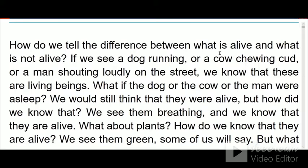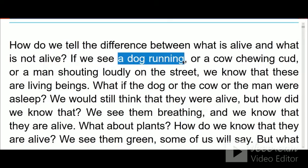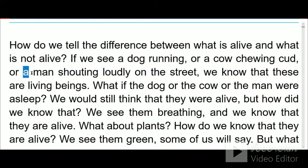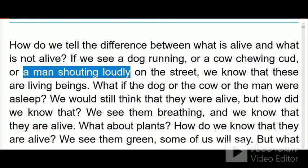How do we tell the difference between what is alive and what is not alive? If we see a dog running, a cow chewing curd, or a man shouting loudly on the street, we know that these are living beings. A dog running is a visual effect. A cow chewing curd is also a visual effect. That means you can see through your eyes whether the thing is living or non-living. All these are visual characteristics.